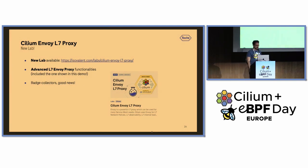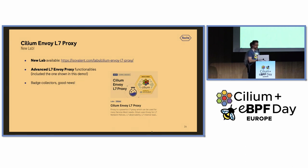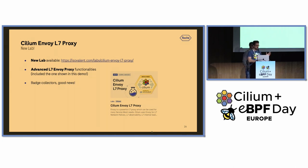One last thing: Isovalent released a new lab last week about Layer 7 Envoy proxy advanced features. Parts of the features demoed today are included in that lab. It's available at the Isovalent booth here at KubeCon, and if you complete it during the week you will get a golden badge sticker.